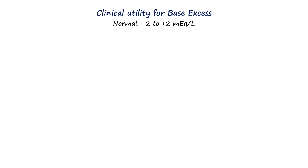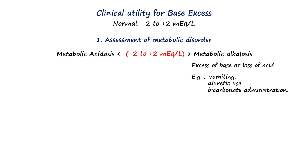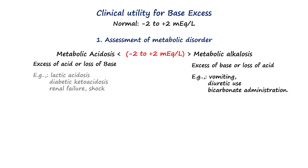From the clinical standpoint, the normal base excess is expected to be within negative 2 to positive 2 mEq/L. Base excess more than positive 2 mEq/L indicates metabolic alkalosis, meaning there is an excess of base or loss of acid. Base excess lower than negative 2 mEq/L indicates metabolic acidosis, or excess of acid or loss of base. Negative base excess is also called base deficit.